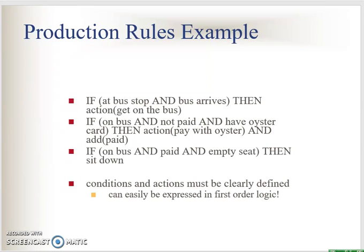An example of production rules is simple. For example: if it is raining, then we get an umbrella. If at a bus stop and the bus has arrived, then we get on the bus. This is a very normal type of representation that we use daily — we just don't realize we are doing it.